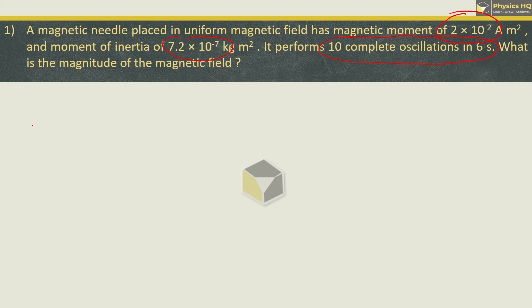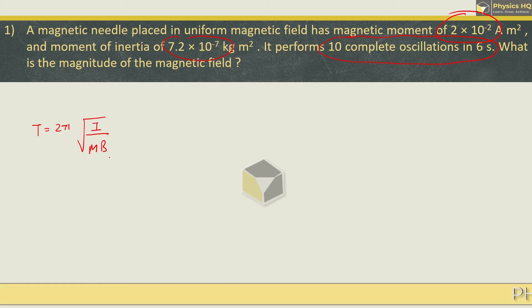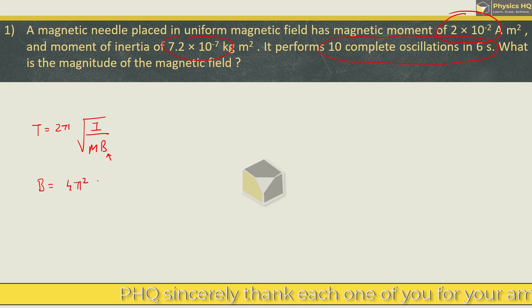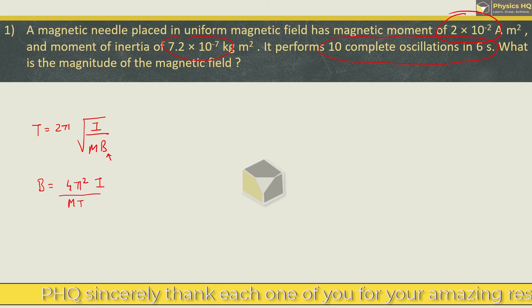What is the magnitude of the magnetic field? So, the formula that we will use here is t is equal to 2 pi root of i by m into b. Now, we are supposed to find the magnetic field b. If we rearrange the equation, b is equal to 4 pi square i upon m into t square.